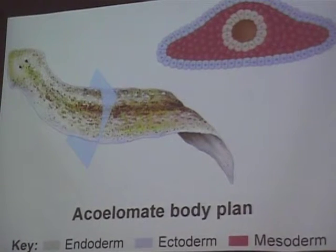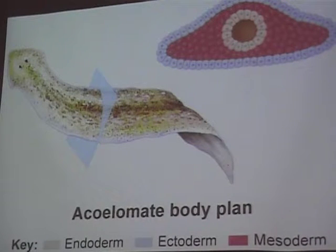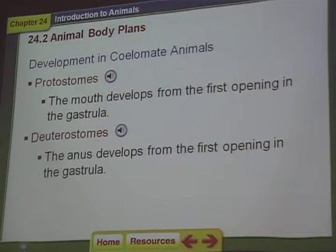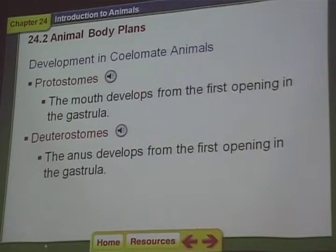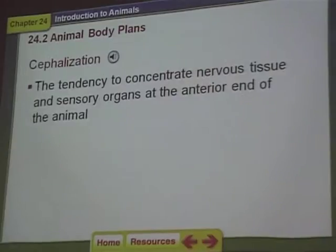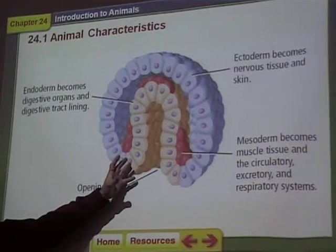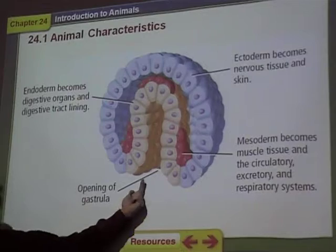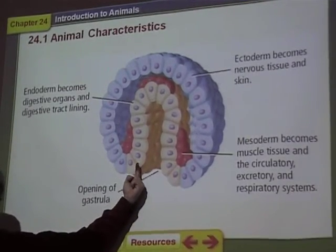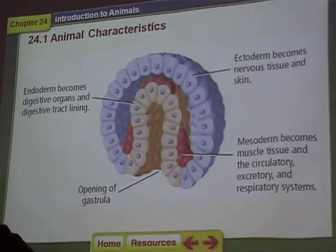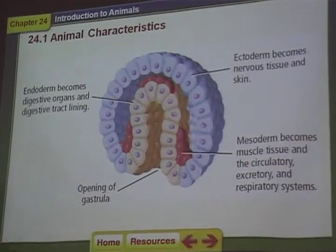An example of a flatworm is a tapeworm — we're going to spend a day discussing tapeworms. Now, protostomes and deuterostomes. These are a couple of words we'll use. Remember the gastrula? There was a hole that would be either the mouth or the anus. If the hole forms the mouth, the organism is known as a protostome — proto means mouth first. If the hole becomes the anus, that's called a deuterostome — that means mouth second.